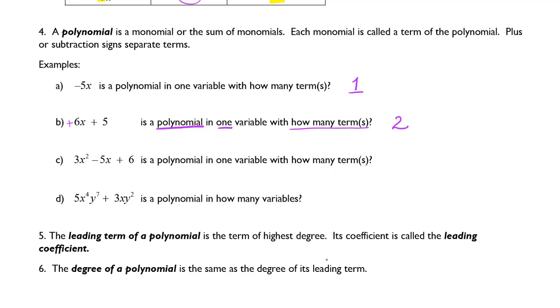The next example is 3x squared minus 5x plus 6. This is a polynomial in one variable, meaning we only have x's in it, with how many terms? 3. We can count up the plus and minus signs. We have a minus, plus, and then we assume the leading term has a plus on it because it didn't have a minus sign.